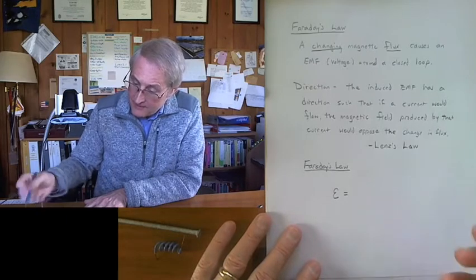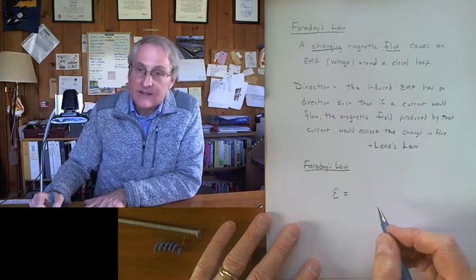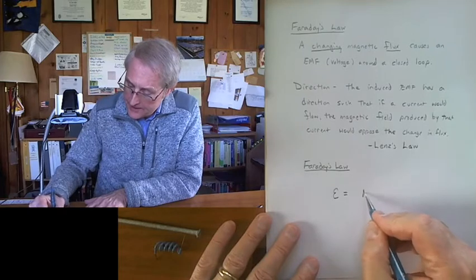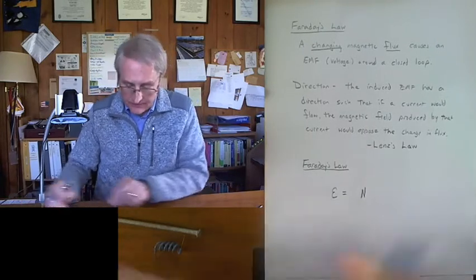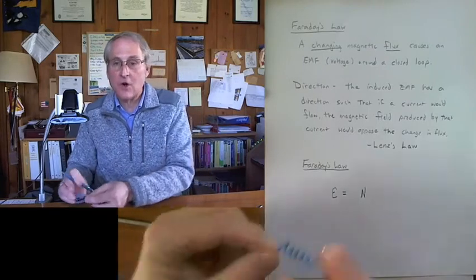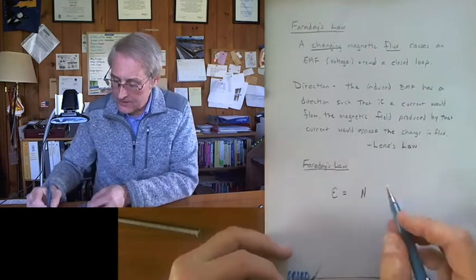This is the EMF induced around the loop, and it's proportional to the number of loops in the wire, so that's big N. So in my little coil here, I remember I counted 5, so N would be 5.